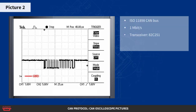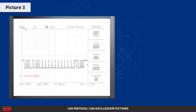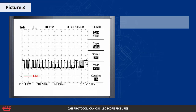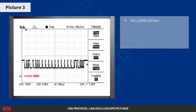Here's the same bus, but the measurement is done between CAN low and ground instead. Here's another message sent at 125 kilobits per second. The message has an 11-bit identifier of 300, or 12C in hexadecimal. Look closely and you should be able to identify the first bits in the message.